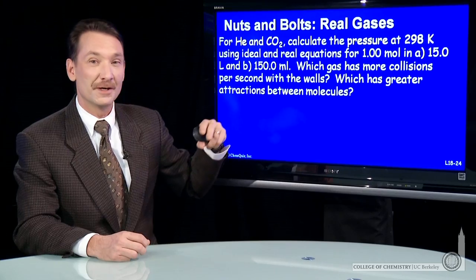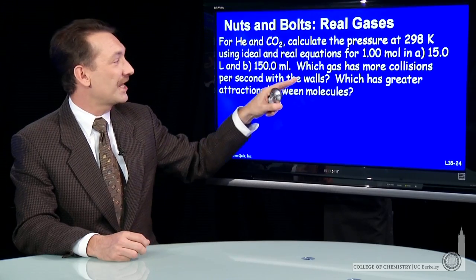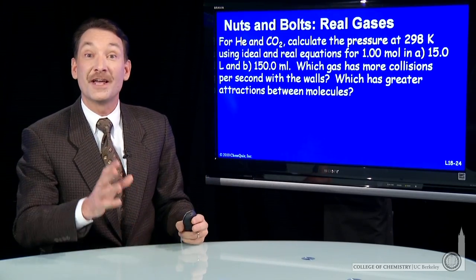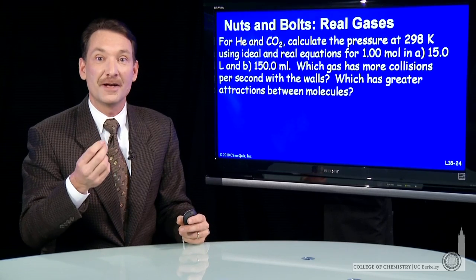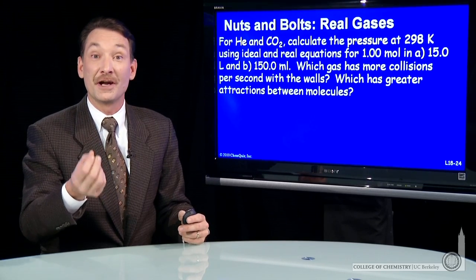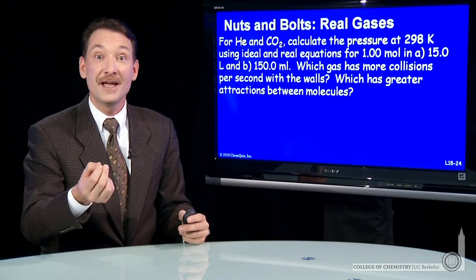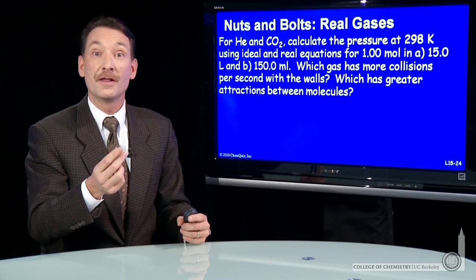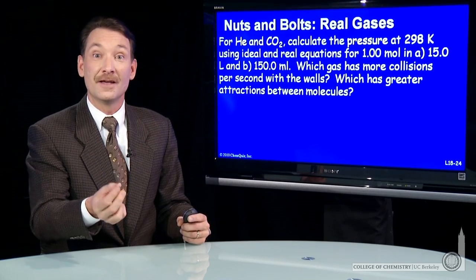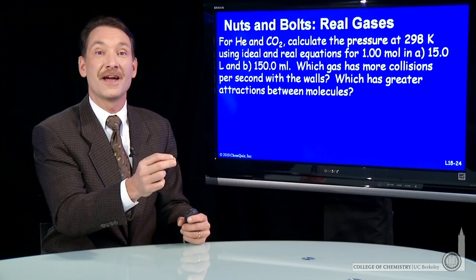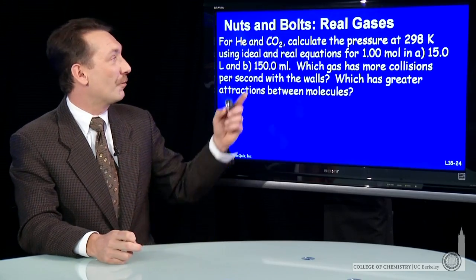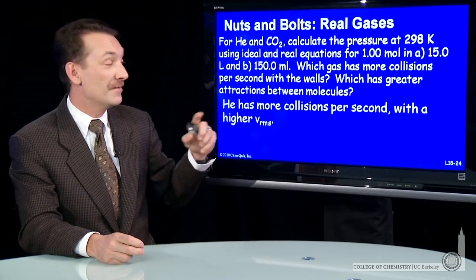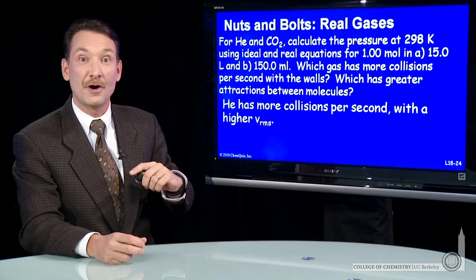These last two we can answer right away. Which gas has more collisions per second with the walls? That's the gas moving at the greater average velocity. The greater average velocity depends on mass — lower the mass, the higher the average velocity. So the one with the higher RMS velocity in this case is helium, and helium will have more collisions with the wall.